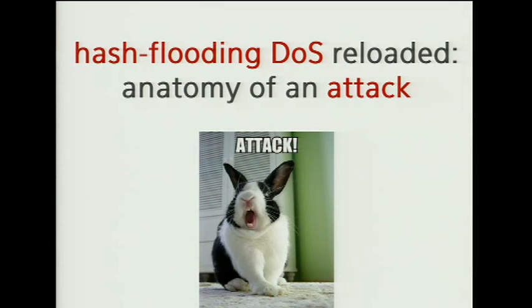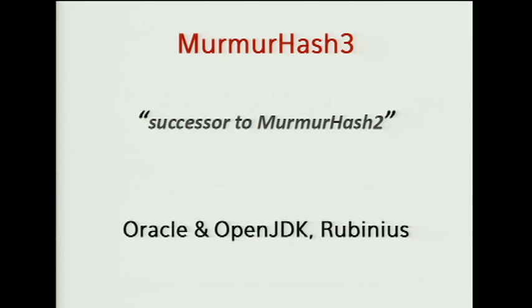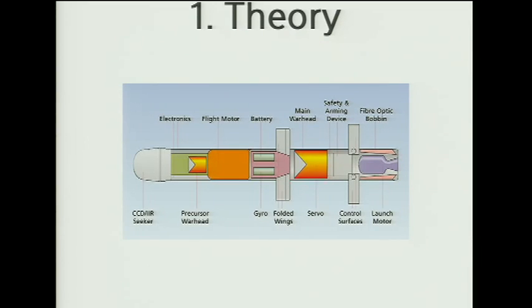I want to present an attack we did. Our target was the MurmurHash family of functions. There's MurmurHash2, widely used in CRuby, JRuby, and the Redis NoSQL database. Then there's MurmurHash3, the successor, which was introduced in Oracle and OpenJDK last year as a response to Klink and Velda's attack. Rubinius also adopted a randomized version of MurmurHash3.